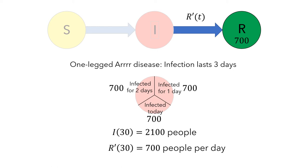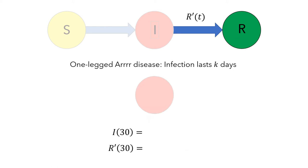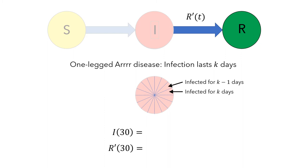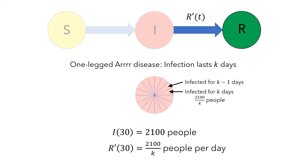Another way to express this is that on day 30, the rate at which people are removed is equal to 700 people per day. We can think of this more generally. If the infection lasts for k days, then we imagine splitting our infected group into k equal size subgroups, where one group has been infected for k days, one has been infected for k-1 days, and so on. So if there were 2,100 infected people, there would be 2,100 divided by k people who had been infected for k days, giving a rate of 2,100 divided by k people per day.